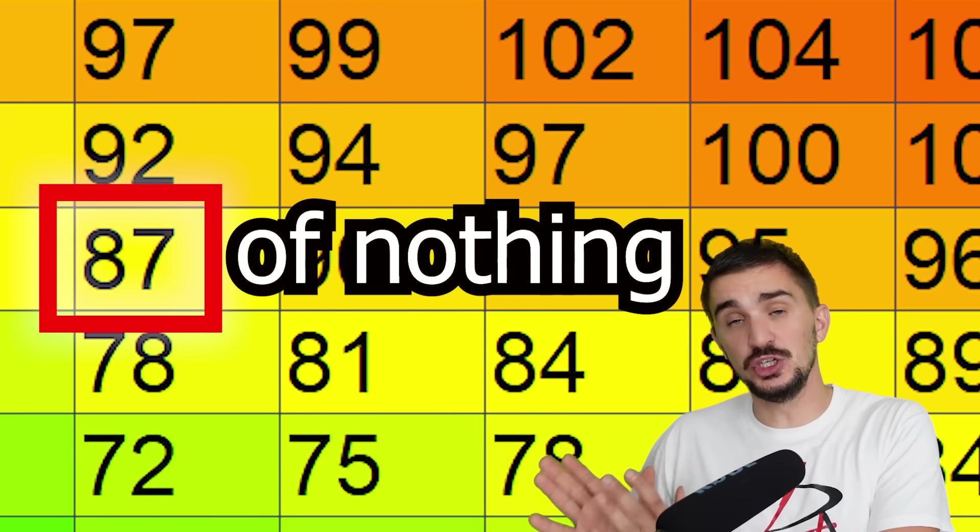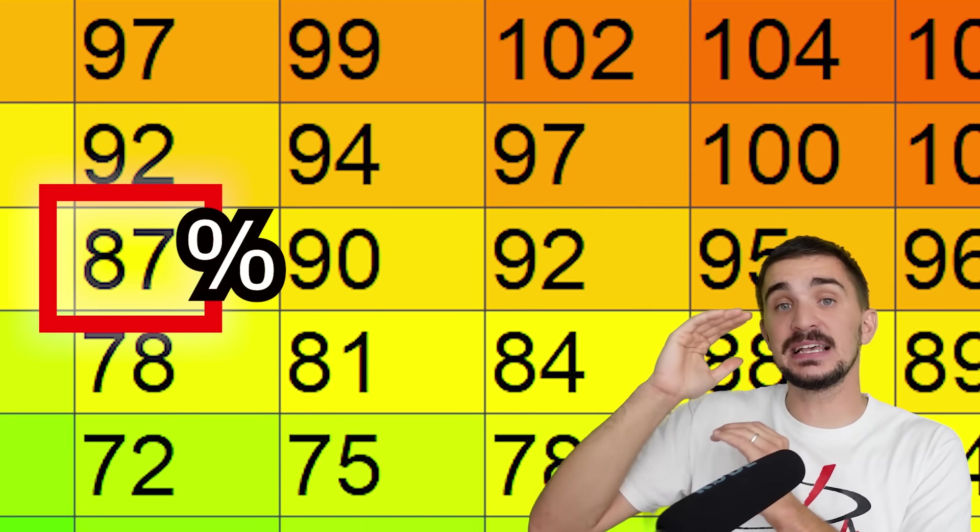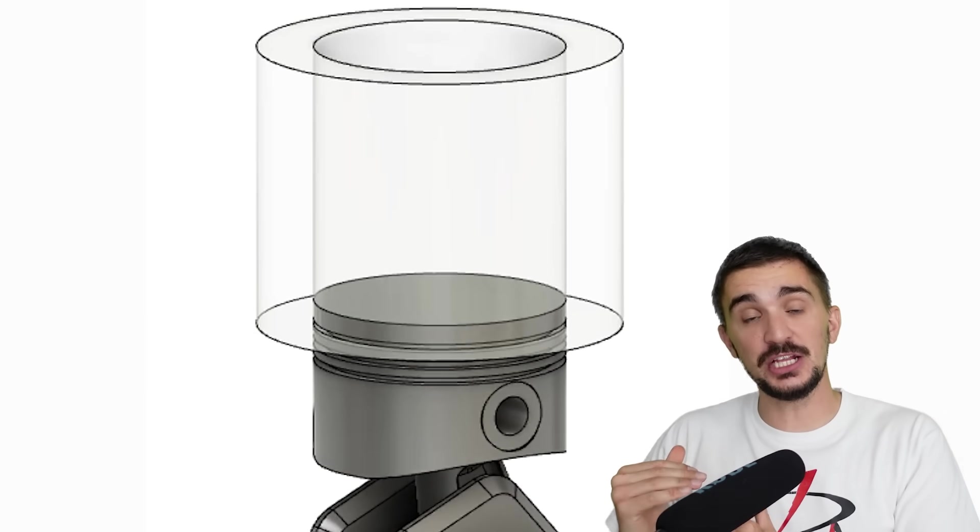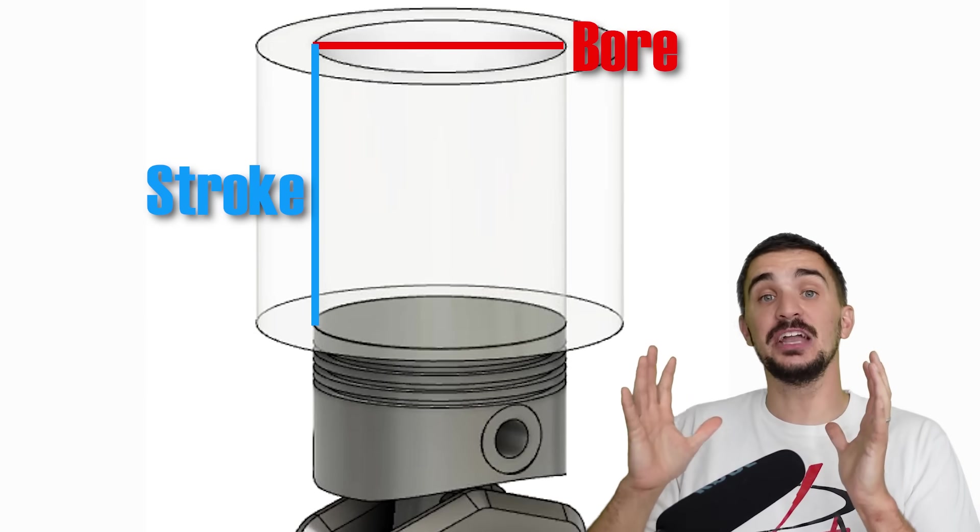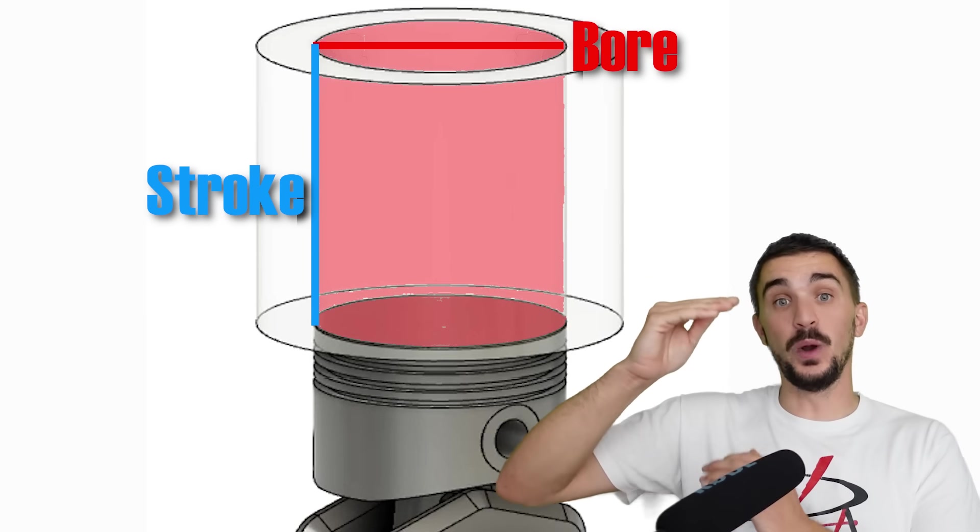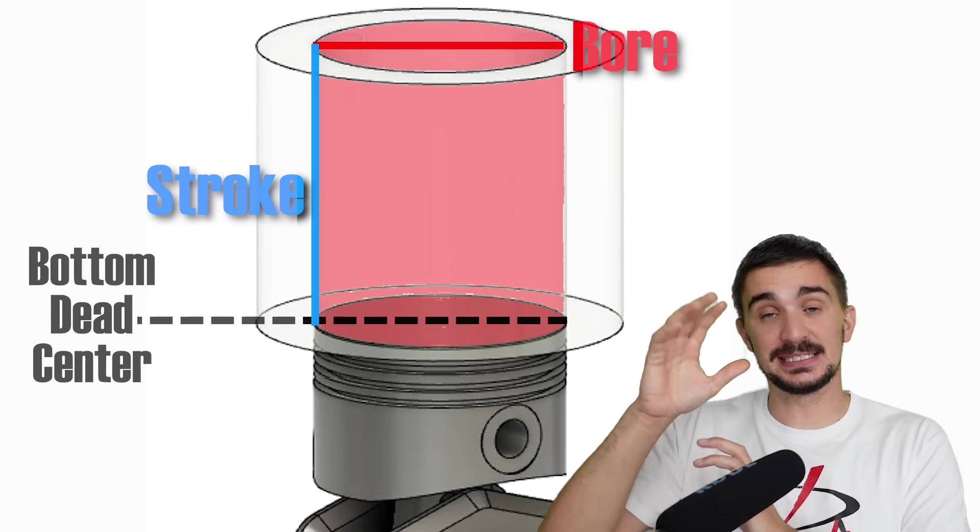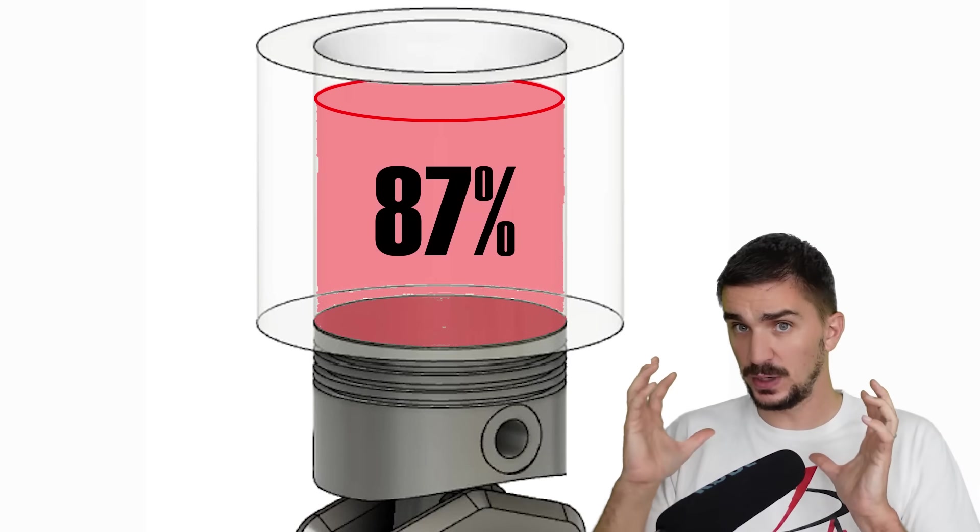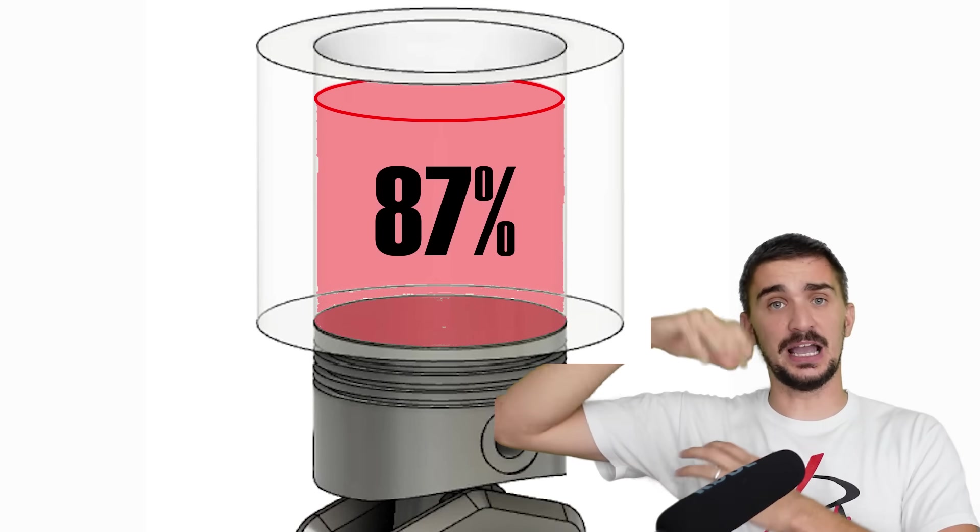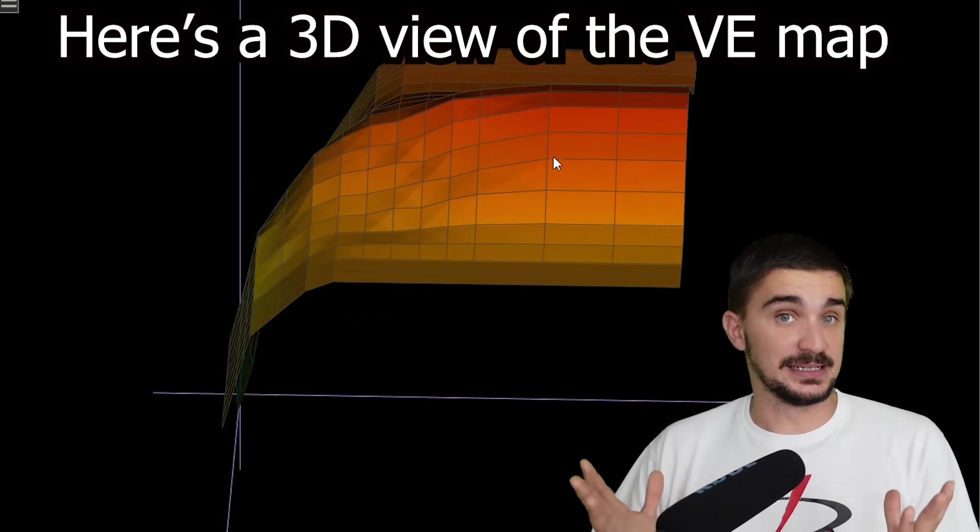It's 87%. And it tells us that 87% of the internal volume or the displacement of the engine, which is bore times stroke or the entire volume of the cylinder above the piston when the piston is at bottom dead center. And 87% tells us that 87% of this has been filled with air. Now you would think that the engine fills its entire internal volume or displacement with air at all times perfectly. Well, actually, it doesn't.